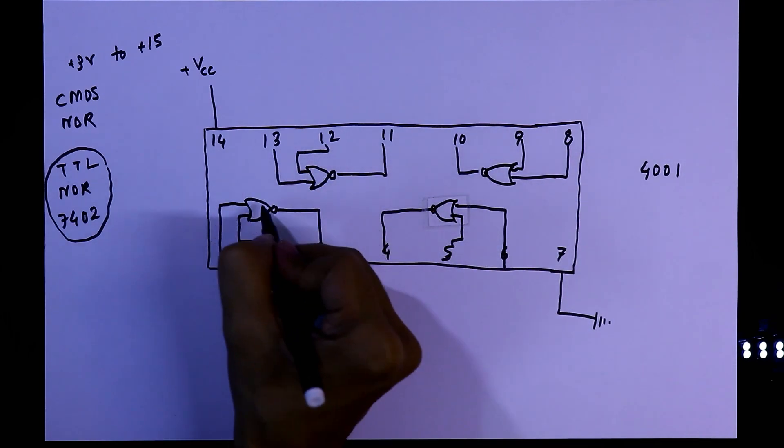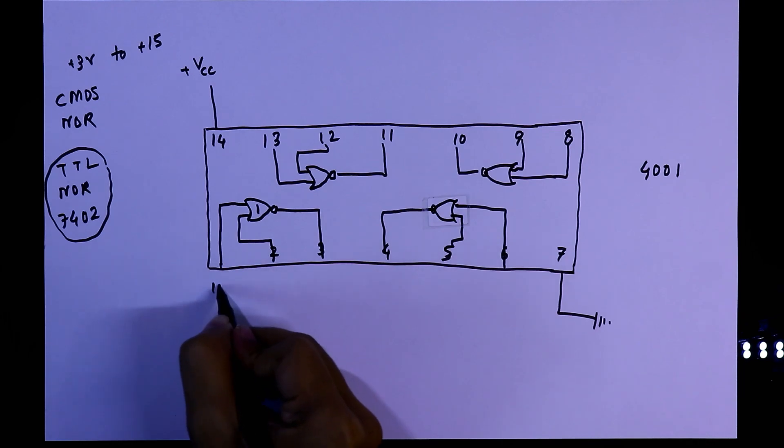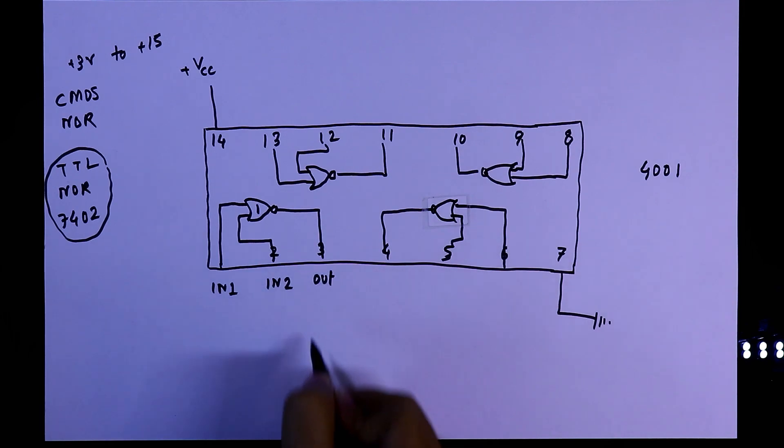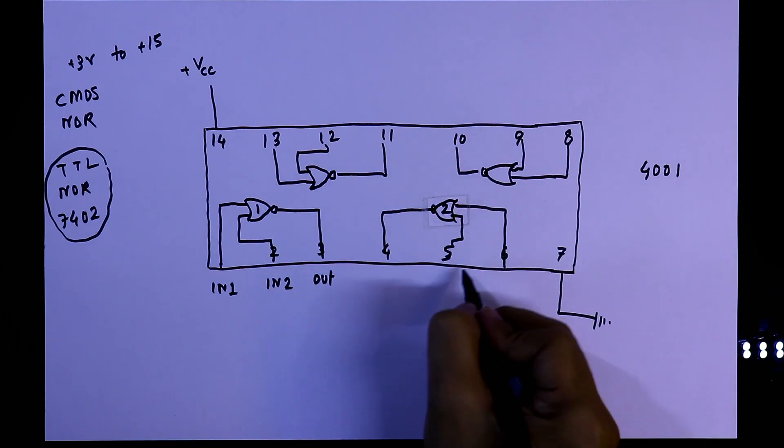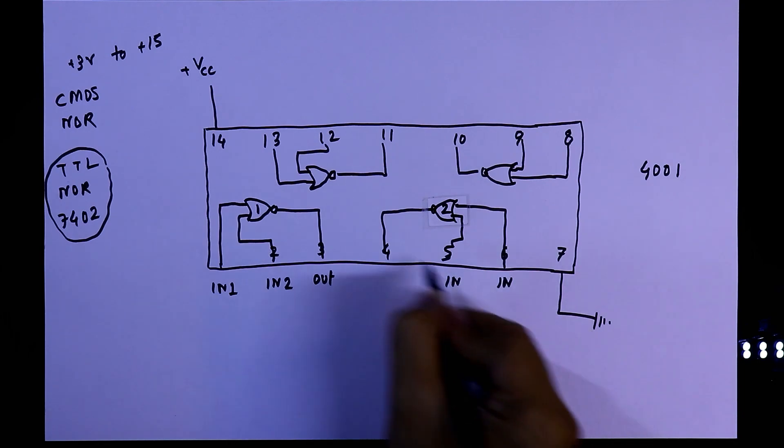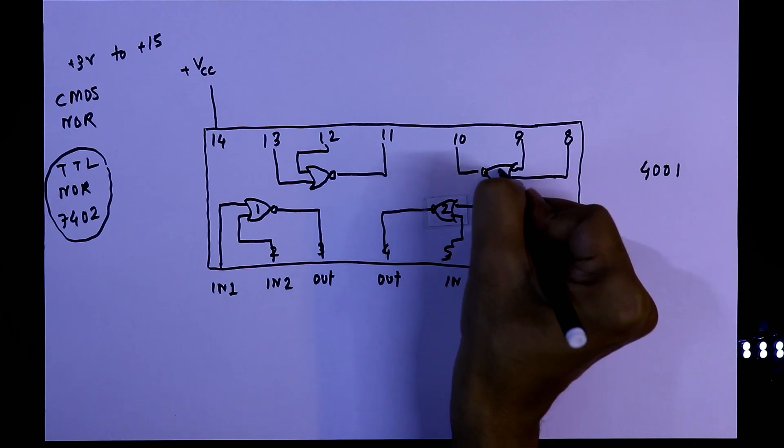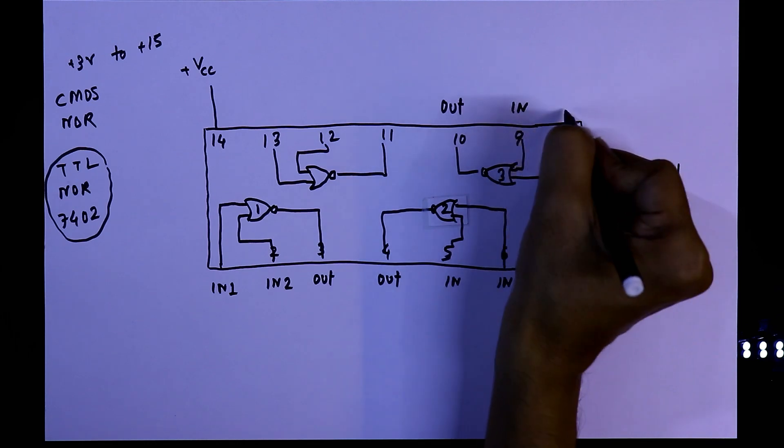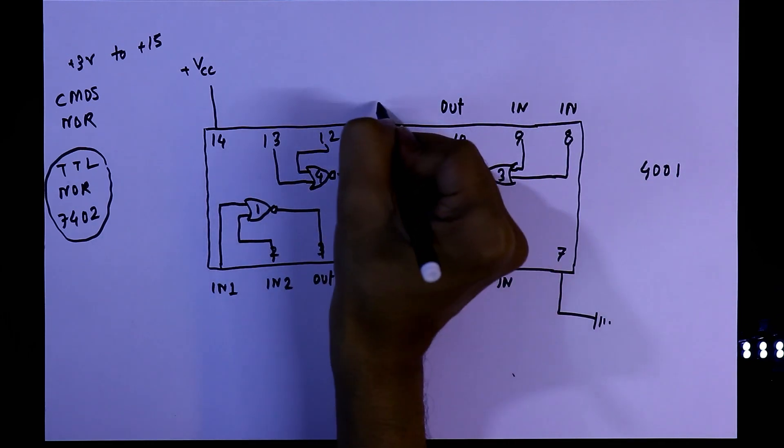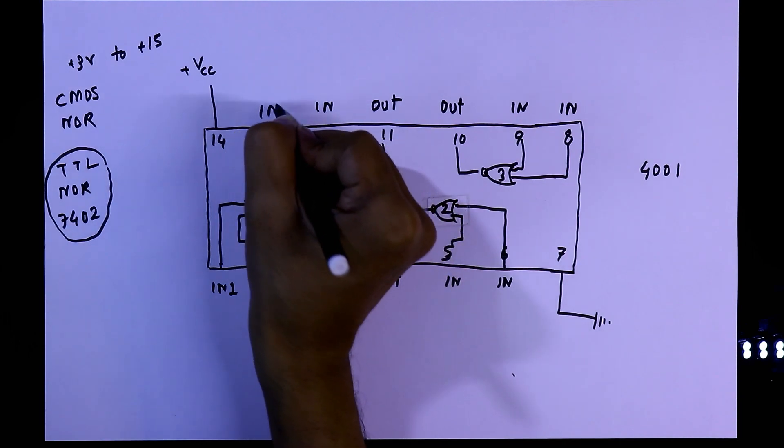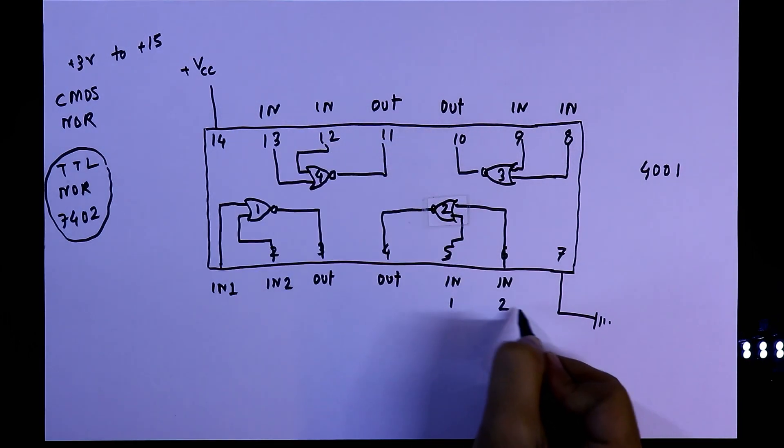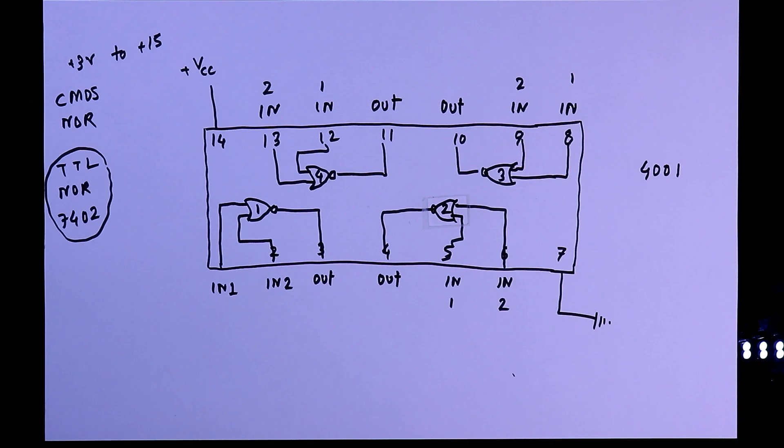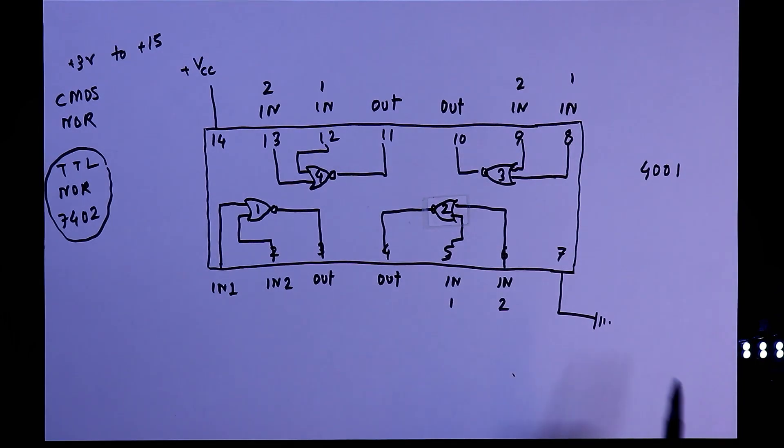If you see gate 1, then these are the inputs: input 1, input 2, and this is the output. If you see gate 2, then these two are input and this is the output. For gate 3 it is output and these two are input. And for gate 4 it is the output and these are two inputs: input 1 and input 2. So this is the pin diagram of 4001.